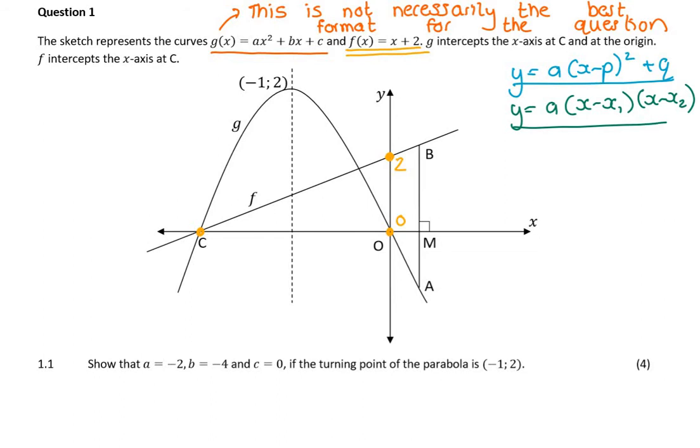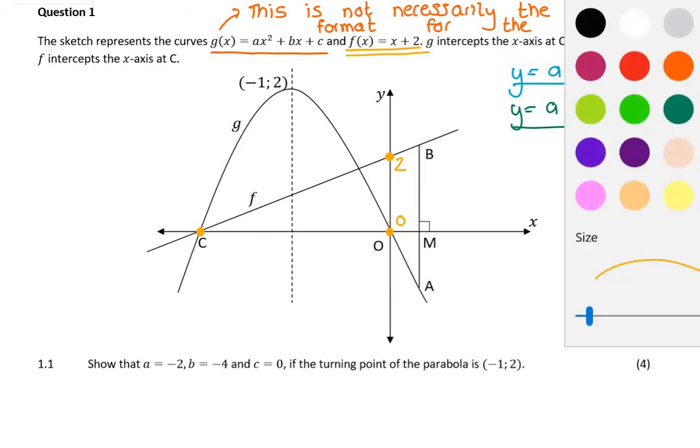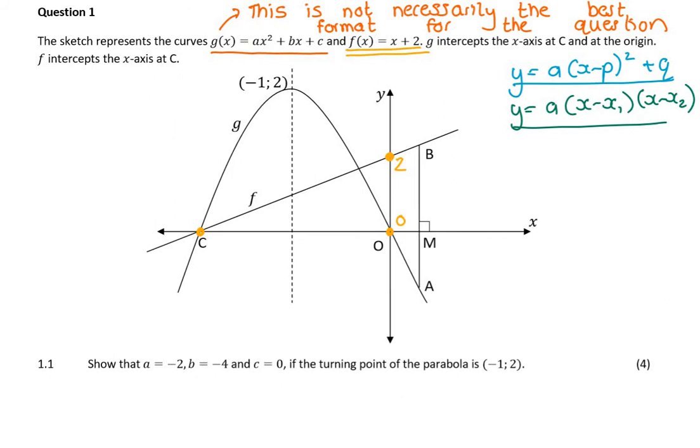The first question says show that a equals minus 2, b equals minus 4, and c equals 0. Why did they say show that? The reason why they say show that is that often these questions are worth 18, 20 marks. And if you can't actually find the equation, you can't do any of the questions.